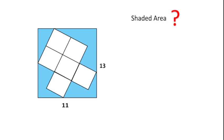Welcome to Definite Mind. In this question, this is a rectangle whose length is 11 and breadth is 13, and there are 6 equal squares embedded in this, and we have to find the shaded area.